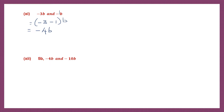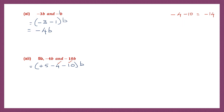Question 12: 5b minus 4b and minus 10b. Again, they're all like terms. Let's give this a sign: plus 5 minus 4 minus 10b. Let's take the two minus signs together: minus 4 and minus 10. When signs are the same, put the same sign and add: 10 plus 4 is 14, so minus 14. So here it will be plus 5 minus 14b. Signs are different — put the sign of the bigger number and subtract. 14 minus 5 is 9, so that's minus 9b.